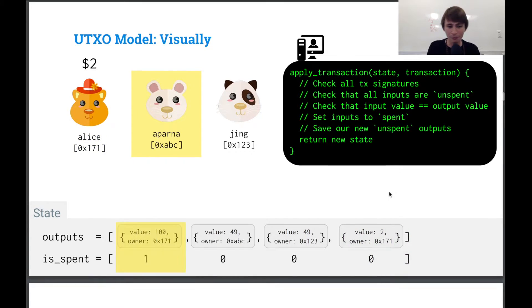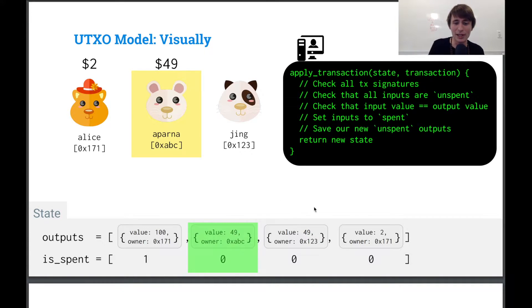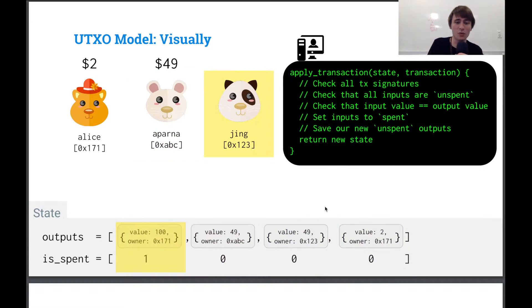Then we do the same thing for Aparna and we keep looking up that one. She owns that one and the other one she doesn't own. So we do the same thing for Jing, 49 and we're good.